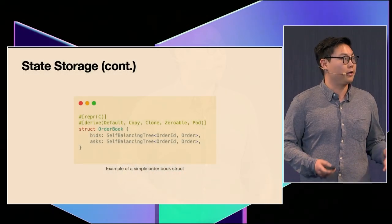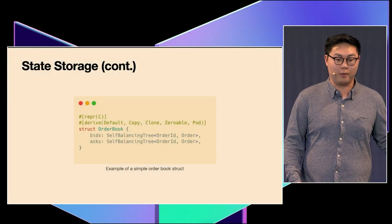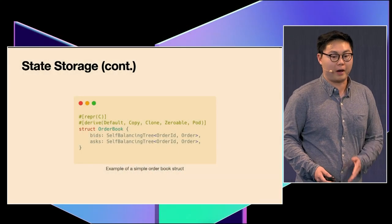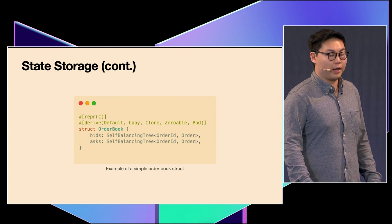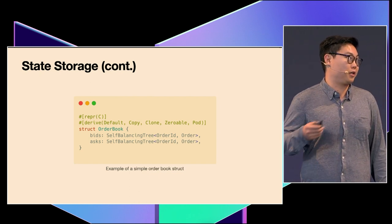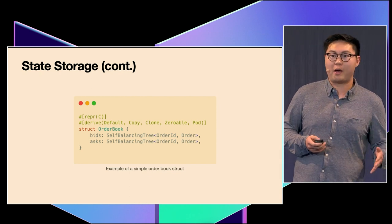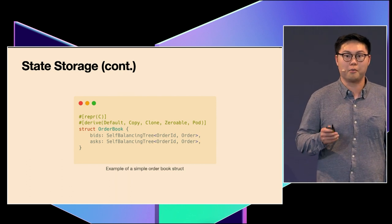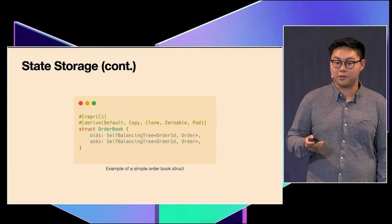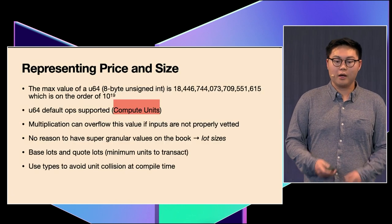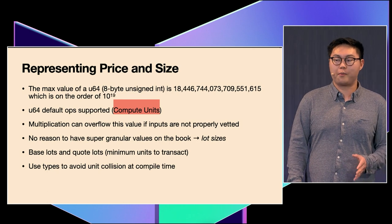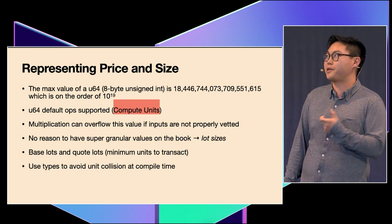Here's an example of how I think an order book might be built on Solana. You really want a structure that is zero-copy — one you can load without copying the data or moving bytes around. You should put the bids and asks into the same account. Using a self-balancing tree makes the most sense because you get the most usage out of the state.